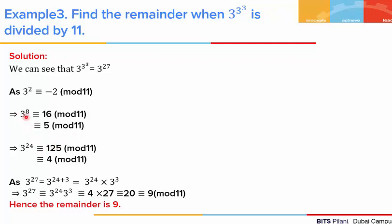Raising both sides to the power 3, we get 3 to the power 24 is congruent to 5 cubed, which is 125, mod 11. And 125 is congruent to 4 mod 11. Going back to 3 to the power 27: we write it as 3 to the power 24 multiplied by 3 to the power 3. This side is congruent to 4, and 3 to the power 3 is 27. Multiplying, we get congruence to 4 times 27, which is 108, and 108 is further congruent to 9 mod 11. Hence the remainder when 3 to the power 3 to the power 3 is divided by 11 is 9.